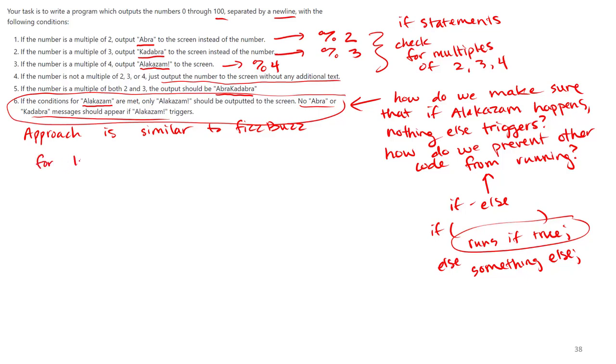So one approach to write this program is to first start your for loop, and inside your for loop, you can check if we have a multiple of 4. If the conditions for Alakazam are met, only Alakazam should trigger. If we're a number multiple of 4, we output Alakazam, right?